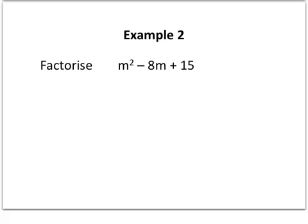Now this second one's a bit trickier. Same problem as before, factorise m squared minus 8m plus 15, and it's this minus 8m in the middle that's going to make it a touch trickier.